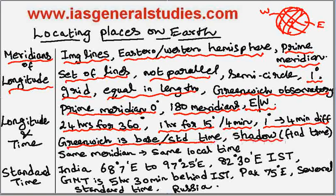Using shadows, we can also find the time. During the evening and the morning the shadow will be longer, and during noon it is shorter. The zone present along the same Meridian will have the same local time on the globe.